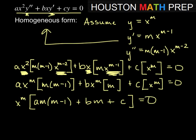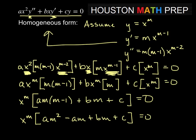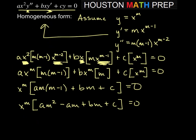If I do a little bit of distributing here inside the brackets, we'll get x to the m times am squared minus am plus bm plus c equal to zero.